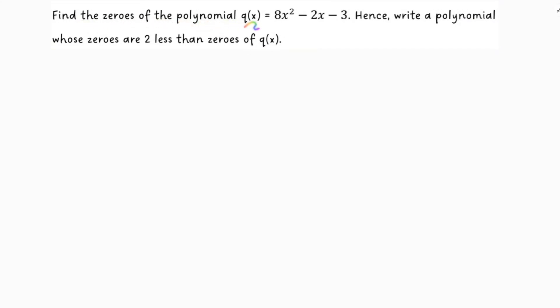Find the zeros of the polynomial q(x) = 8x² - 2x - 3. Hence write a polynomial whose zeros are 2 less than the zeros of this polynomial q(x).